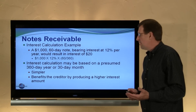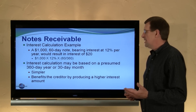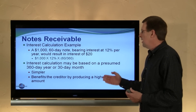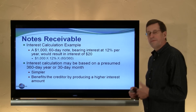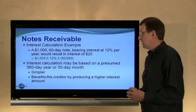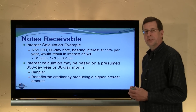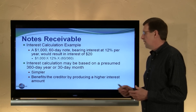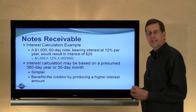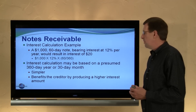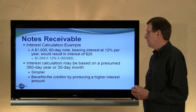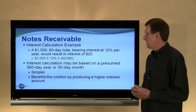Interest might be calculated on a 360-day or a 365-day year. The 360-day is simpler for calculation purposes, typically used in textbook illustrations, and may be used in business applications as well. It tends to benefit the lender or the payee of the note a bit, since you're assuming the interest accrues at a faster rate with a 360-day year.